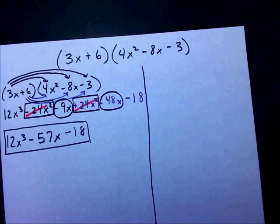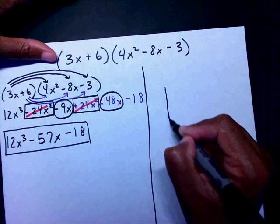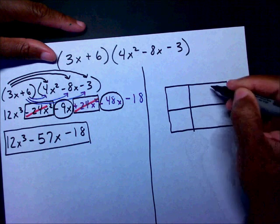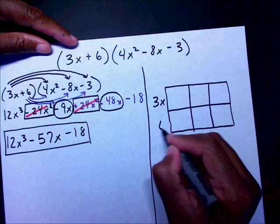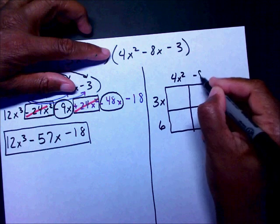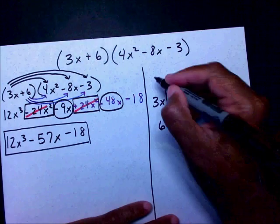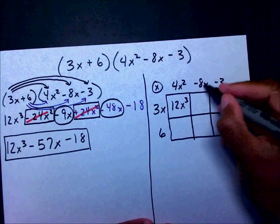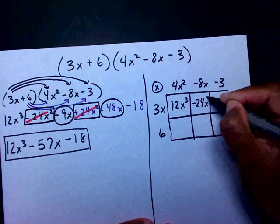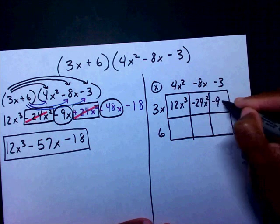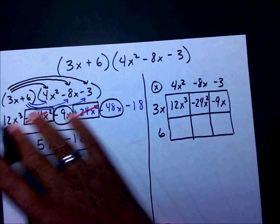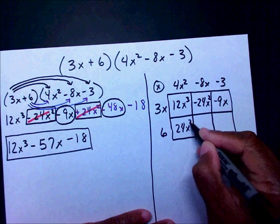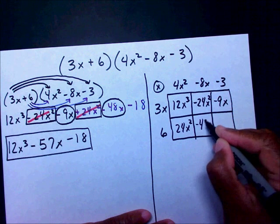Now let's do the box method. Since I have a binomial times a trinomial, I'm going to draw a 2 by 3 box with 3x and 6 on one side, and 4x squared, negative 8x, minus 3 on the other. 3x times 4x squared is 12x cubed. 3x times negative 8x is negative 24x squared. 3x times negative 3 is negative 9x. 6 times 4x squared is 24x squared. 6 times negative 8x is negative 48x. 6 times negative 3 is negative 18.